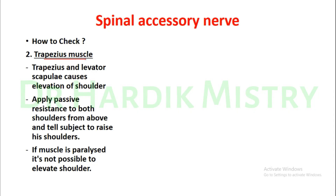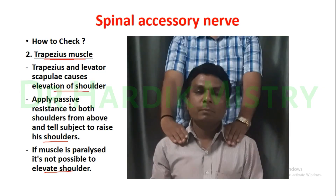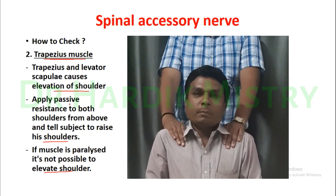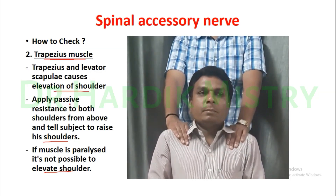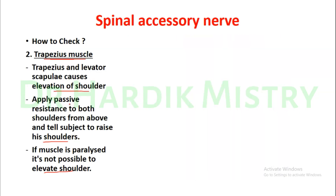For the trapezius muscle: both the trapezius and levator scapulae cause elevation of the shoulder. Apply passive resistance to both shoulders from above and tell the subject to raise his shoulders. If the muscle is normal, both shoulders elevate equally. If the muscle is paralyzed, the subject is not able to elevate the shoulder.